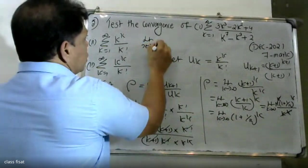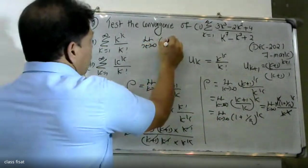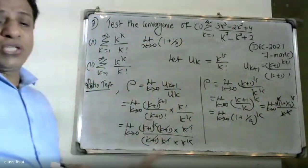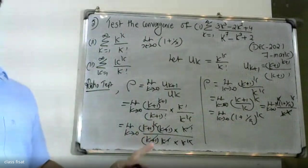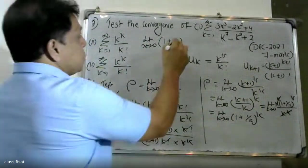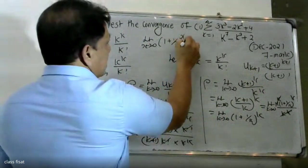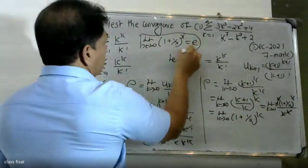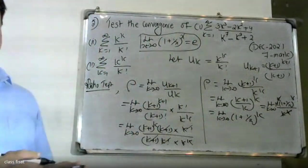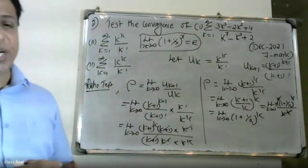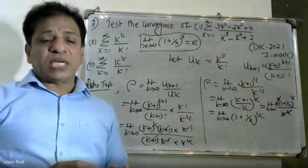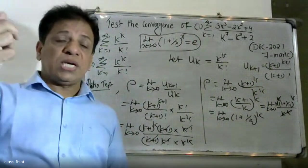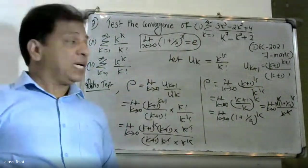The limit as x tends to infinity of (1 + 1/x) raised to 4x. The standard result: the limit as x tends to infinity of (1 + 1/x) raised to x equals e. Therefore the limit as x tends to infinity of (1 + 1/x) raised to 4x equals e.